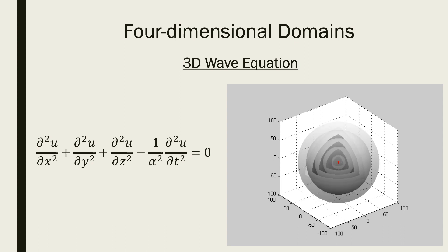Finally, the 3D wave equation has four independent variables. It models the time propagation of waves in three-dimensional space. For example, the vibrations of any solid object in our universe.